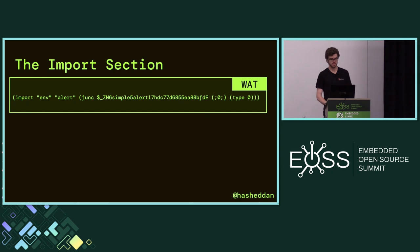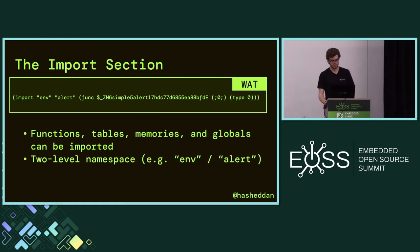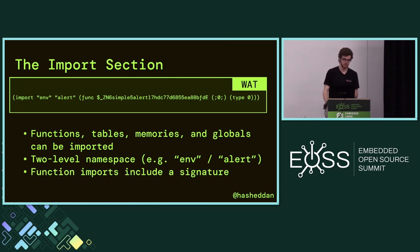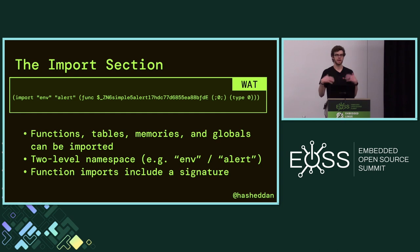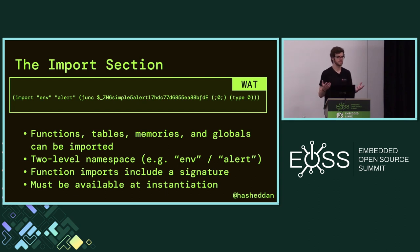Looking at the import section — that's exactly like we said, we have an alert function. You can import functions, tables, memories, and globals — basically anything you want the WebAssembly module to be able to access that's outside of its sandboxed environment. There is a namespacing mechanism for imports: here we're in the 'env' namespace importing a function with name 'alert'. Function imports include a signature, which allows the WASM function that calls it to know how to invoke that function. These imports must be available at instantiation.